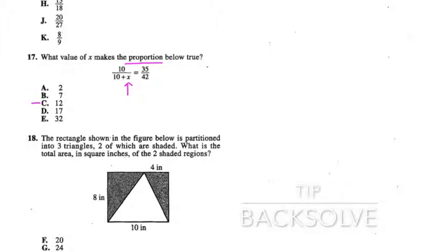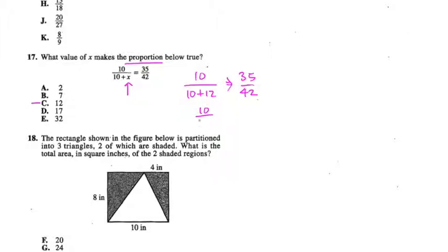10 plus 12 equals... does 10 over 22 equal 35 over 42? 10 over 22 is less than one-half. 35 over 42, on the other hand, is greater than one-half, closer to one. So this would not be your answer. The number in the denominator is way too big for the 10 in the numerator. What we want is a number closer to 10, bigger than 10 but closer to it. So these will not be your answer. Seven probably isn't your answer either.